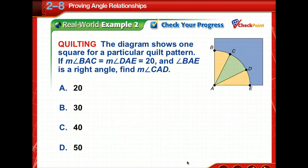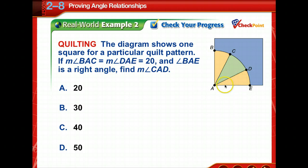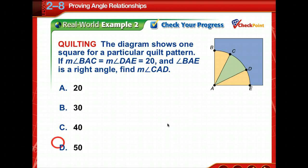Time to check your progress using this diagram. Redraw the figure and label what is given. You know that BAC is 20, DAE is 20, and BAE is 90. Taking 90 minus 40 gives 50 as the measurement of CAD.